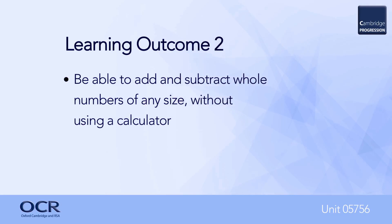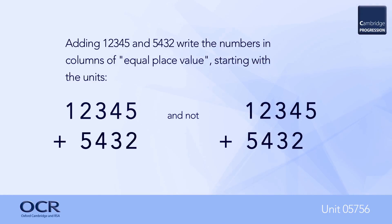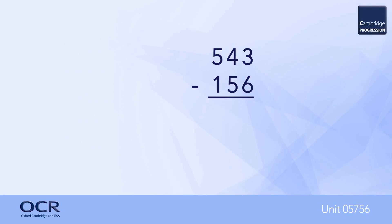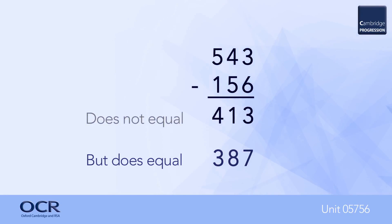For learning outcome number two, learners should be able to add and subtract whole numbers of any size without using a calculator — this is a key employability skill. Placing numbers in columns prior to calculation, learners must use the place value system to line up numbers in the correct order. For example, adding 12,345 and 5,432: the two should be written under the five, as shown. A common mistake when performing subtractions is to subtract the smaller digit from the larger digit within the column.